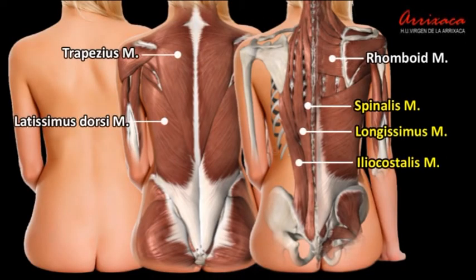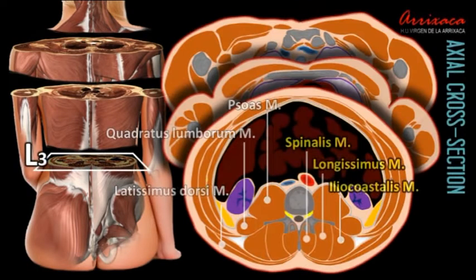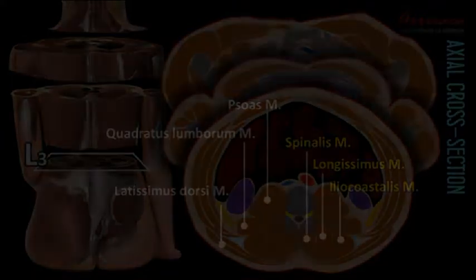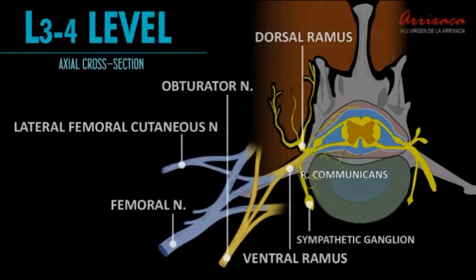The erector spinal muscle is a symmetric anatomical structure which consists of three columns of muscles, each running parallel on either outer side of the vertebral column at the lumbar, thoracic, and cervical regions.